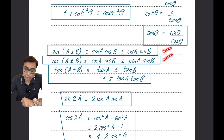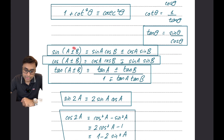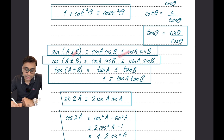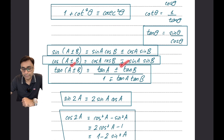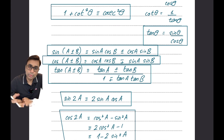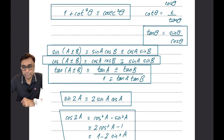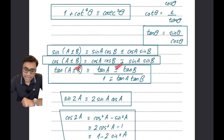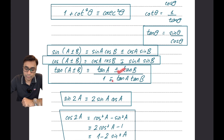Then you have the compound angle formulas for sums and differences. The sign on top is paired with the sign on top, and the sign at the bottom is paired with the sign at the bottom. So sin(a + b) = sin a cos b + cos a sin b, whereas sin(a - b) = sin a cos b - cos a sin b. Exactly the opposite applies to cos: a plus in the middle becomes a minus, and a minus becomes a plus. Please, even if you are very confident about knowing the formula, still check the formula sheet to avoid mistakes. You also have a compound angle formula for tan: tan(a + b) = (tan a + tan b) / (1 - tan a tan b), and tan(a - b) = (tan a - tan b) / (1 + tan a tan b).